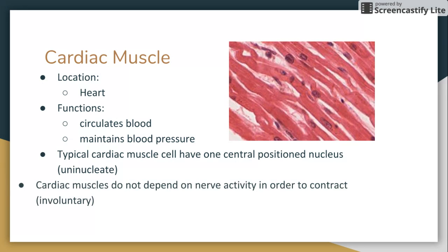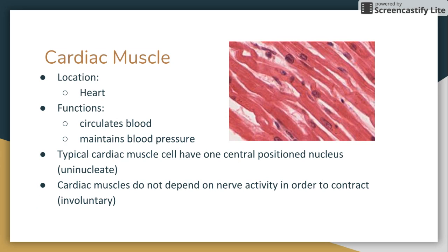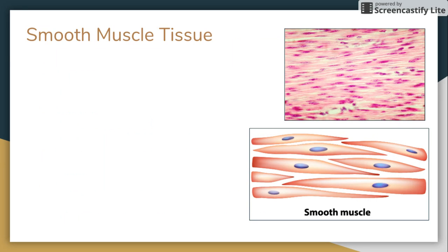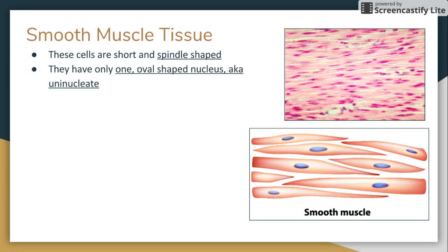Typical cardiac muscle cells are uninucleate, with one central-position nucleus. Cardiac muscles do not depend on nerve activity in order to contract — pacemaker cells set a regular contraction rate. Smooth muscle tissue cells are short and spindle shaped.